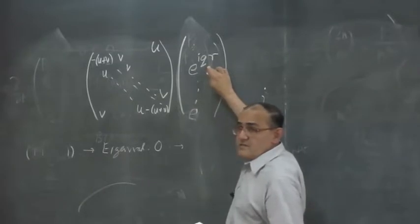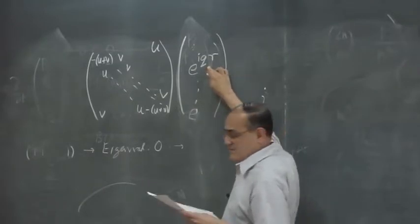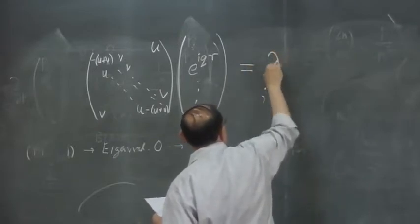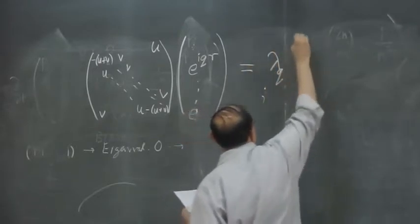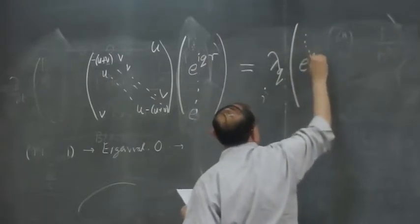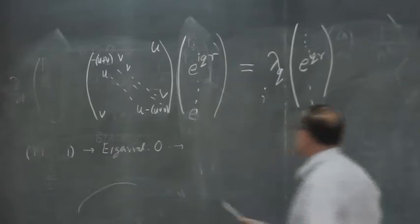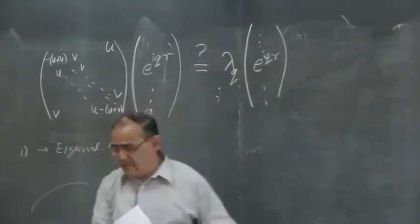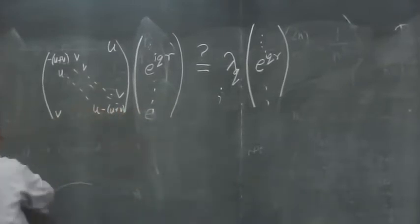Why do I try this? As I said, it is suggested by translational invariance. And we will just verify that it is. The question is, is this equal to some eigenvalue lambda_q times the same eigenvector? Because I have to normalize it. And it is immediate to see that this is satisfied.